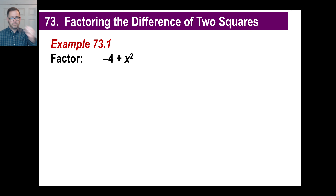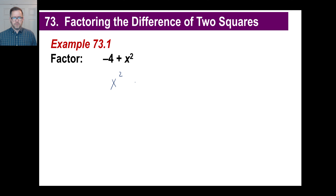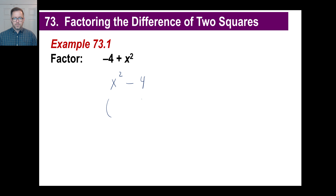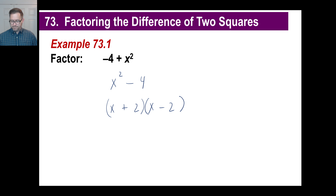Here's one they've mixed up a bit. We see negative 4 plus x squared, which looks odd, so let's rewrite it: x squared minus 4. The x squared is a square of something, and 4 is the square of 2. That's a difference, so we can factor it. Set it up as two binomials: the square root of x squared is x, and the square root of 4 is 2. Attach a plus and a minus: (x + 2)(x − 2). That's it.